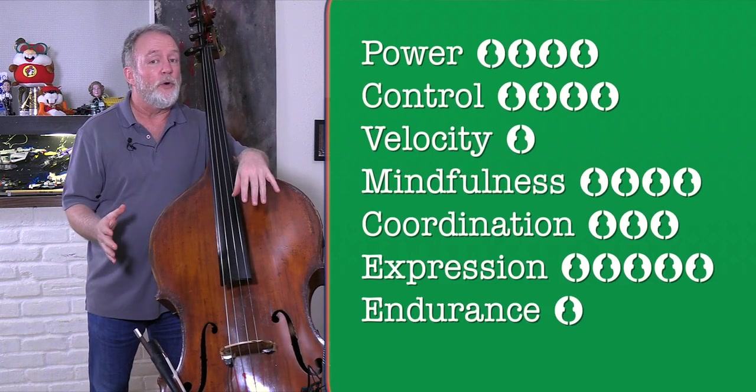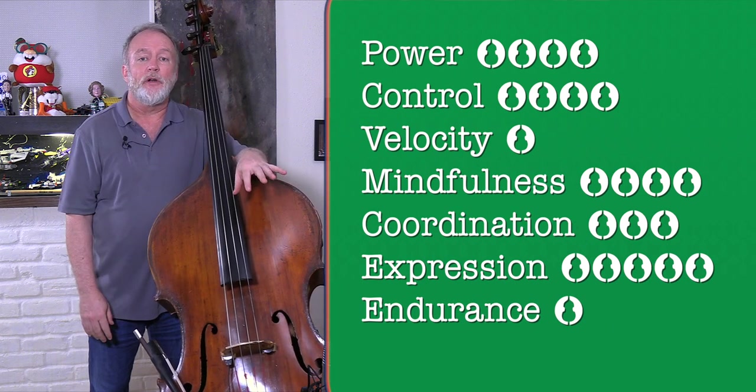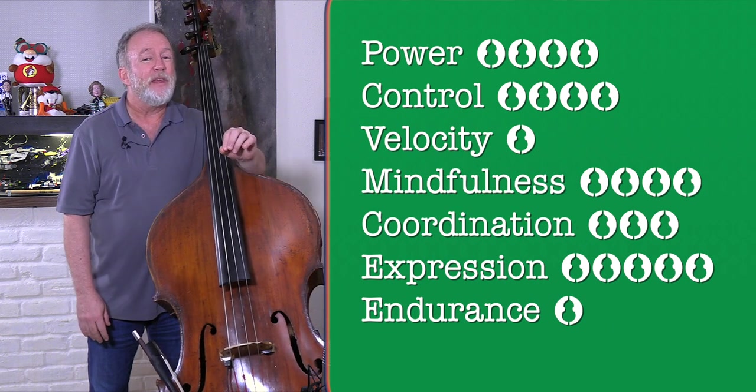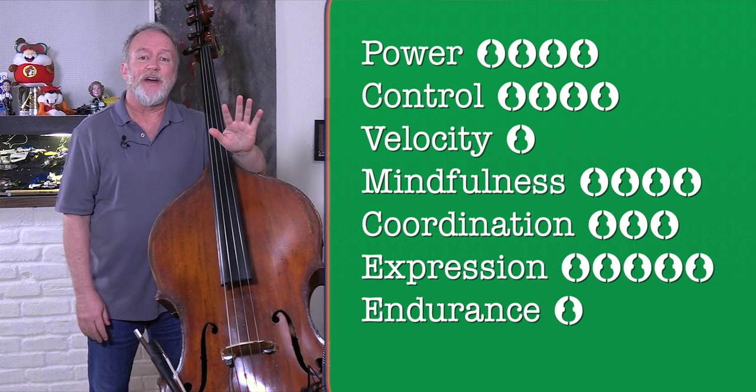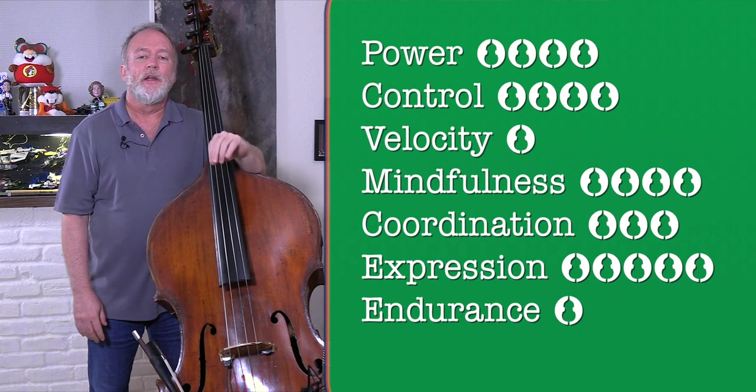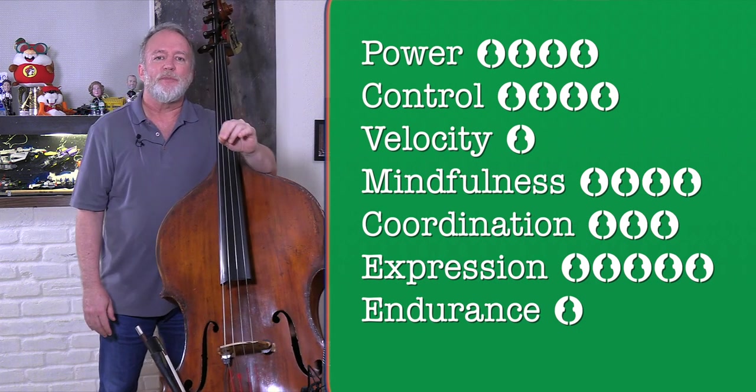I give this excerpt the following ratings: power is 4, control is 4, velocity is 1, mindfulness is 4, coordination is 3, expression is 5, and endurance is 1. Notice that power is lower than expression.